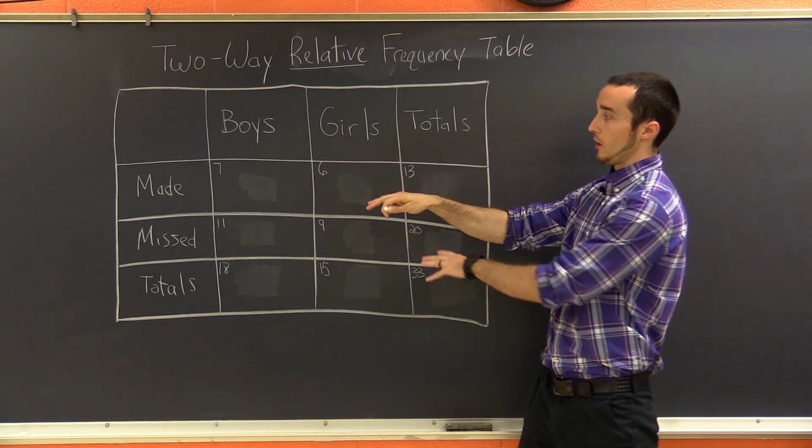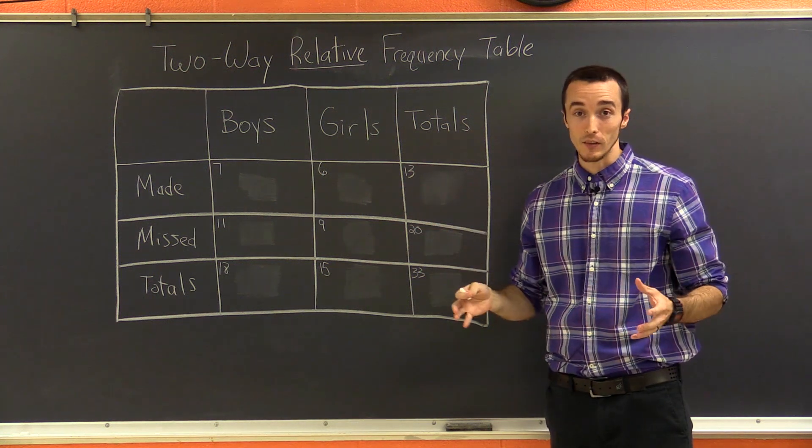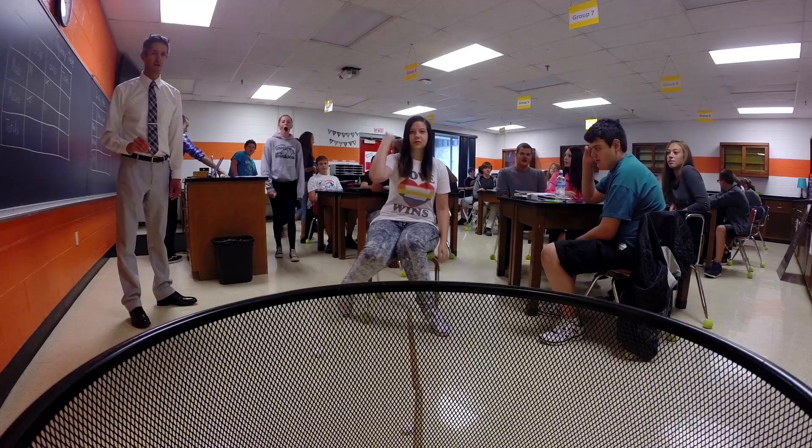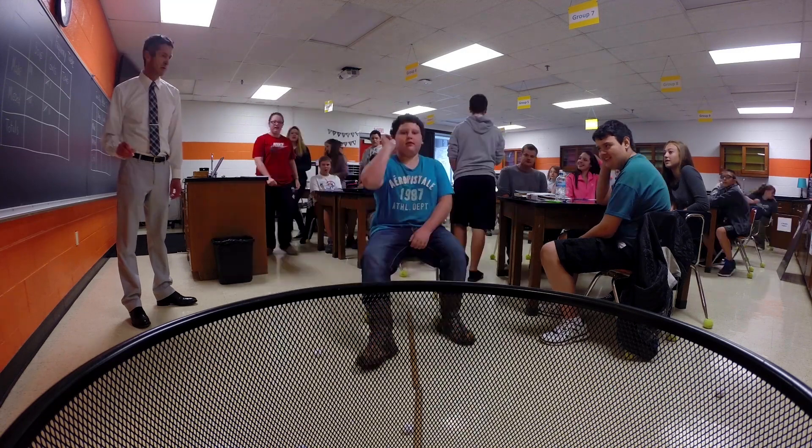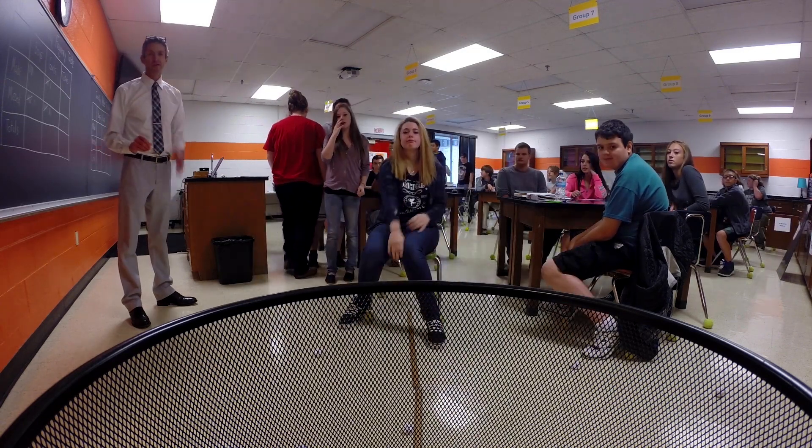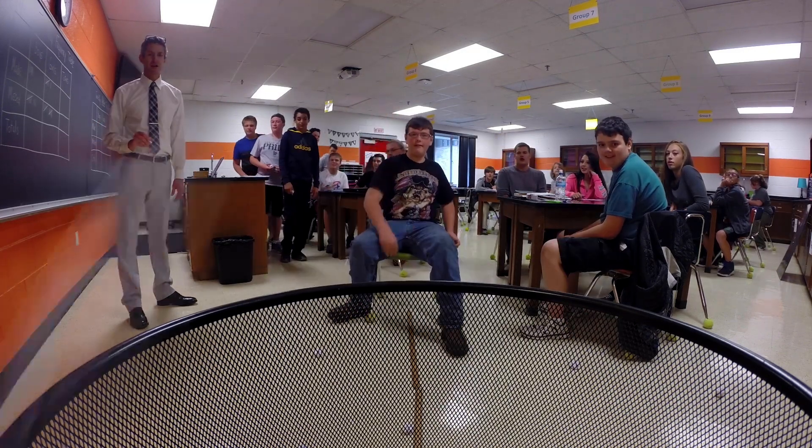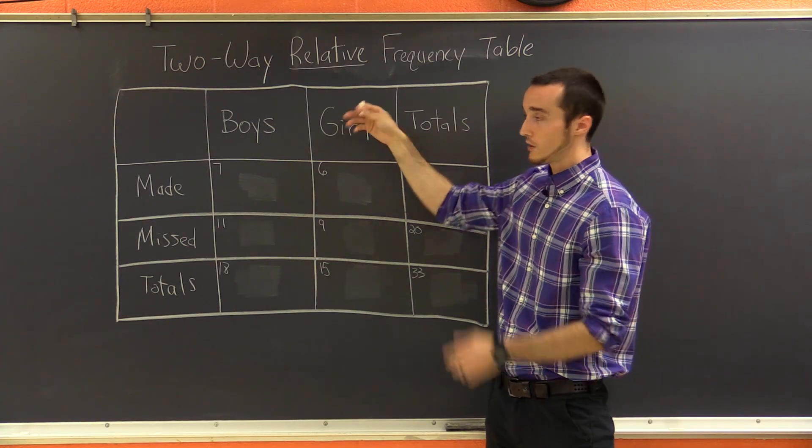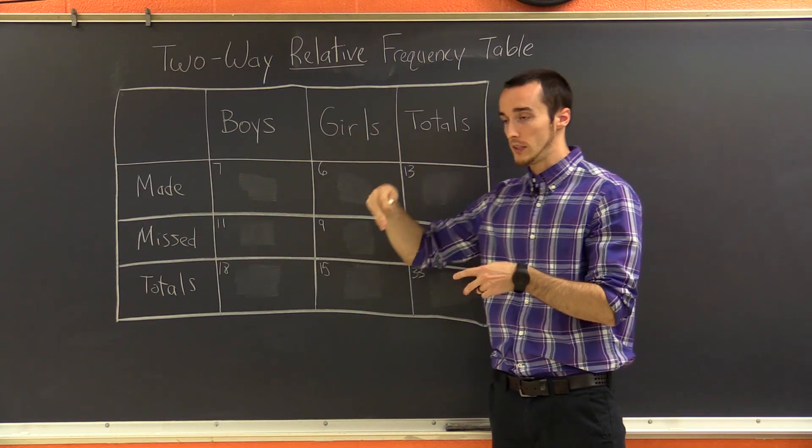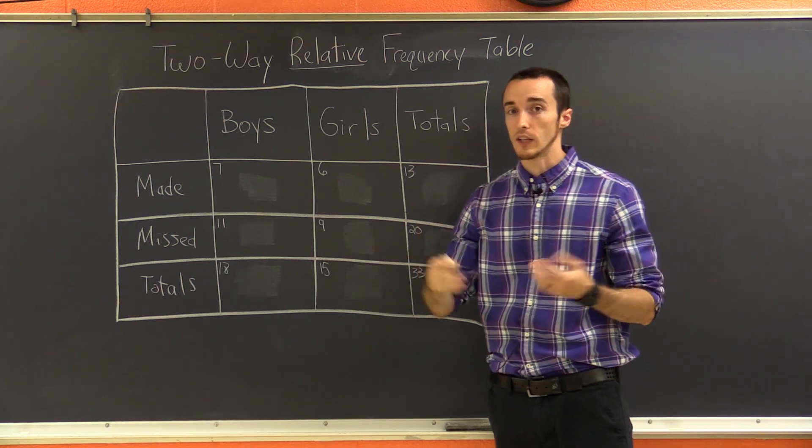Well, first of all, our information here is going to be based on a class experiment that we did. We got into this epic game of trash football, and we kept track of how many people made and missed a basket, but we also kept track of boys and girls. So that's what you can see here. This is why we used a two-way relative frequency table, because we can keep track of two sets of information.